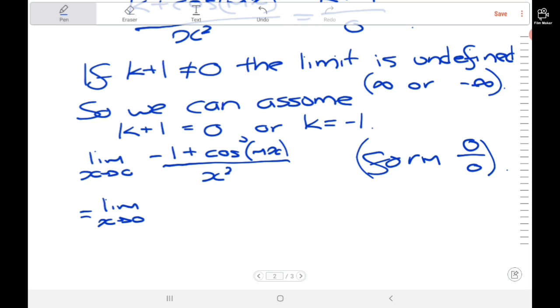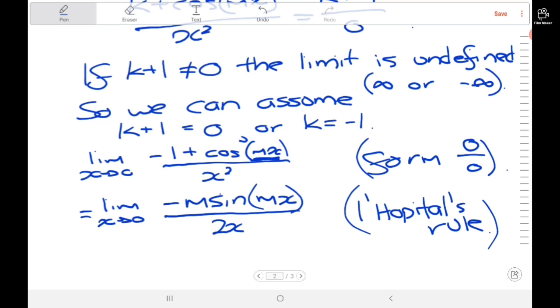Differentiating the numerator: negative 1 differentiates to 0. Cosine differentiates to negative sine, and using the chain rule for mx, we get negative m times sine of mx in the numerator. In the denominator, x squared differentiates to 2x, by L'Hopital's rule.